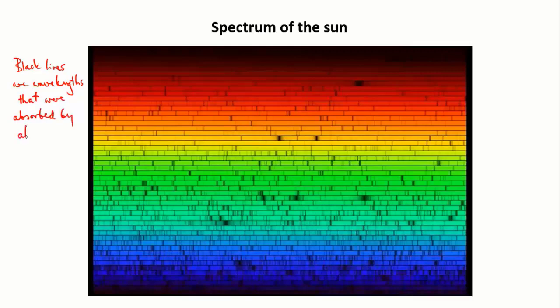So the black lines were in fact a kind of secret code, almost like a morse code, by which the sun was letting us know what it was made of.